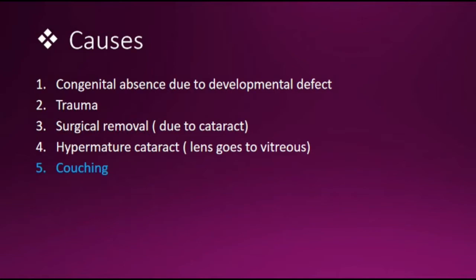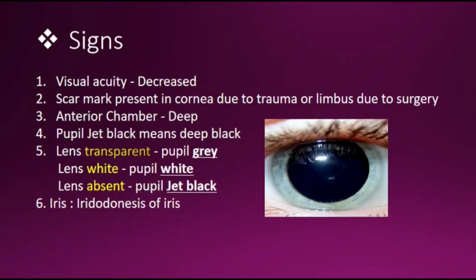Causes of Aphakia: congenital absence due to developmental defect, trauma, surgical removal due to cataract or hypermature cataract where the lens goes to the vitreous, and couching — an old method of cataract surgery where self-inflicted trauma is done.